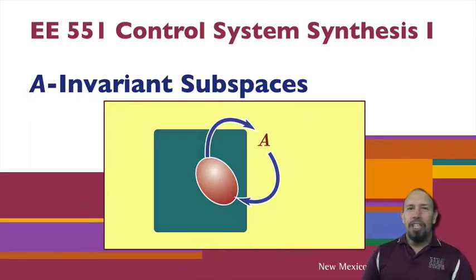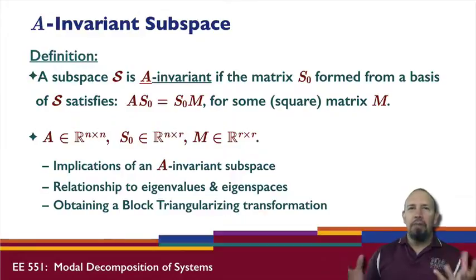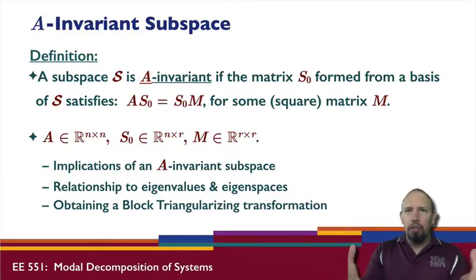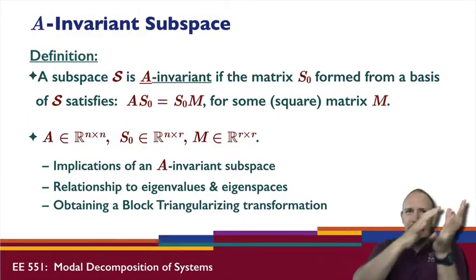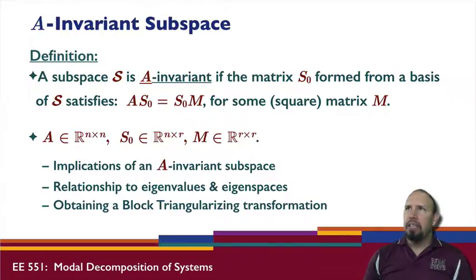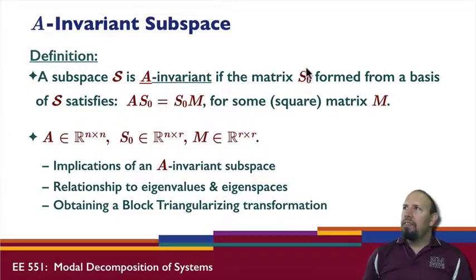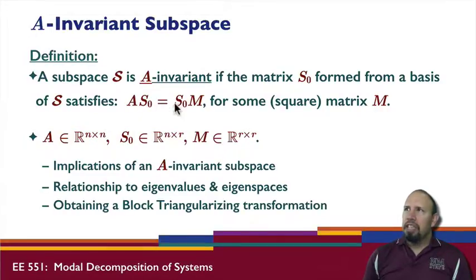We're going to look at something called an A-invariant subspace. A subspace S is said to be A-invariant if the matrix S₀ formed from a basis of that subspace satisfies this relationship: A times S₀ is equal to S₀ times M for some square matrix M.